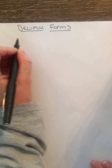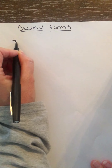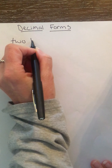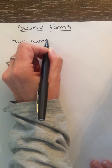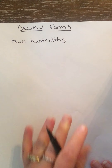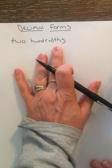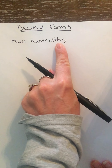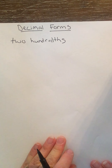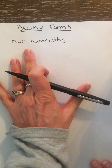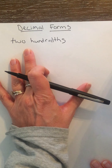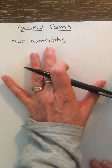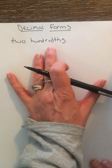So for example, we say 'two hundredths.' We know it's talking about a decimal because we have the 'th' ending. The easiest way to go from word form to decimal form is to write it as a fraction first — it seems to be easier to translate a fraction to a decimal.